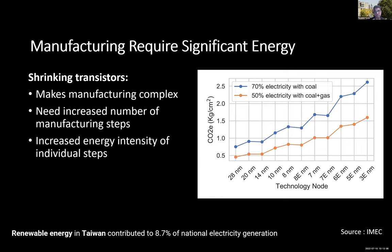This manufacturing part is becoming more and more complex, already requiring significant energy powered by coal and natural gas. Shrinking transistors improves storage density and chip functionality, but it makes manufacturing more complex — requiring more manufacturing steps and more energy, as each individual step is becoming increasingly energy intensive.